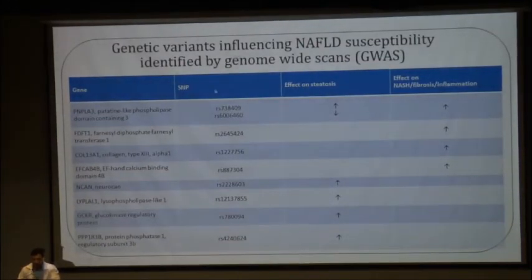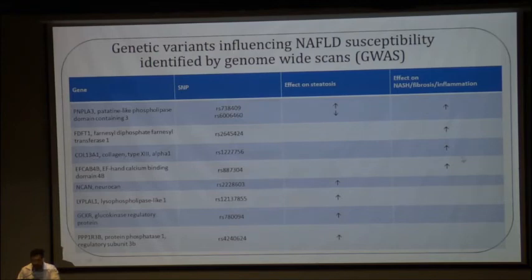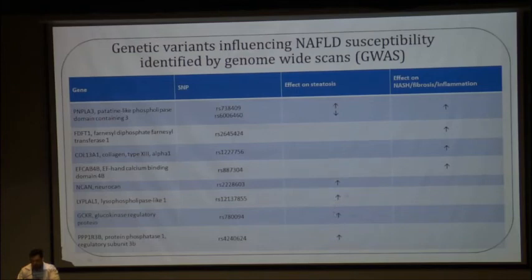These are the genetic variants in brief which have been found to influence susceptibility to NAFLD, identified using genome-wide association studies. PNPLA3 has been associated with increased risk of steatosis, NASH, fibrosis, and inflammation. UDP-glucuronosyltransferase (diphosphate transferase) has been shown to increase fibrosis. SNPs in collagen 1A1 and collagen 3A1 genes affect NASH, fibrosis, and inflammation. Other genes including neurocan, lysophospholipase-like 1, glucokinase regulatory protein, and protein phosphatase 1 have been shown to promote hepatic steatosis.